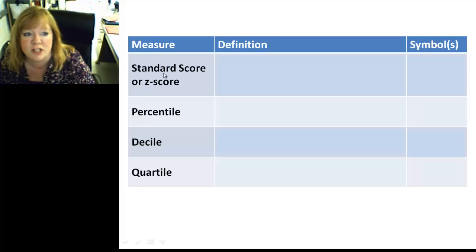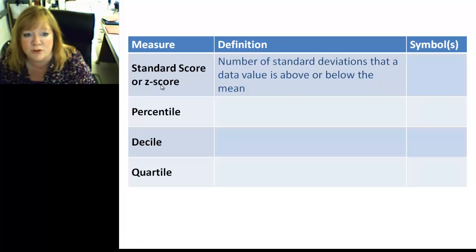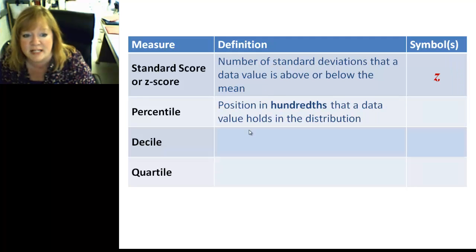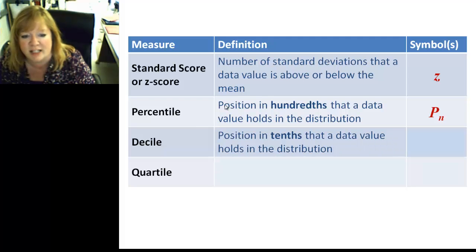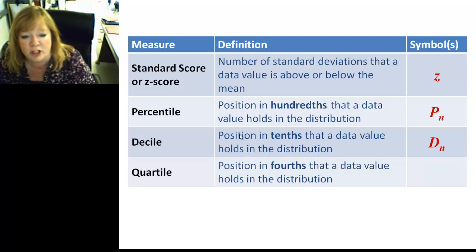Here's the measures of positions that we have so far. Standard score or Z scores. Remember, that is to tell your relative standing to everybody else. It's the number of standard deviations that a data value is above or below the mean. And, that's the symbol of Z. Percentile is the position in hundredths that a data value holds in the distribution. That's P sub N for, you know, like P sub 50, P sub 25, and so on. Decile. Position in tenths that a data value holds in the distribution. And, that's D sub N. And, then quartile, Q. Hey, by the way, if you ever play Scrabble, decile, quartile, those might be good words in Scrabble. Anyway, this position in fourths that a data value holds in the distribution. Splits your data up into four groups. That's Q sub N. You probably have to pause it to write all that down, but that's what it is.